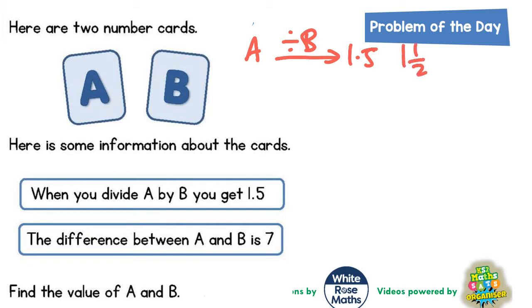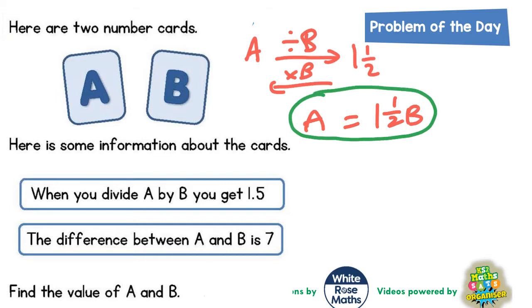So that must mean if you work in reverse and go backwards from 1.5, then 1.5 times B would give you A. In other words, A is basically 1.5 times B, or 1.5 lots of B. And this fact is so important to our understanding of the rest of the problem that I'm going to circle it. So A is 1.5 lots of B.